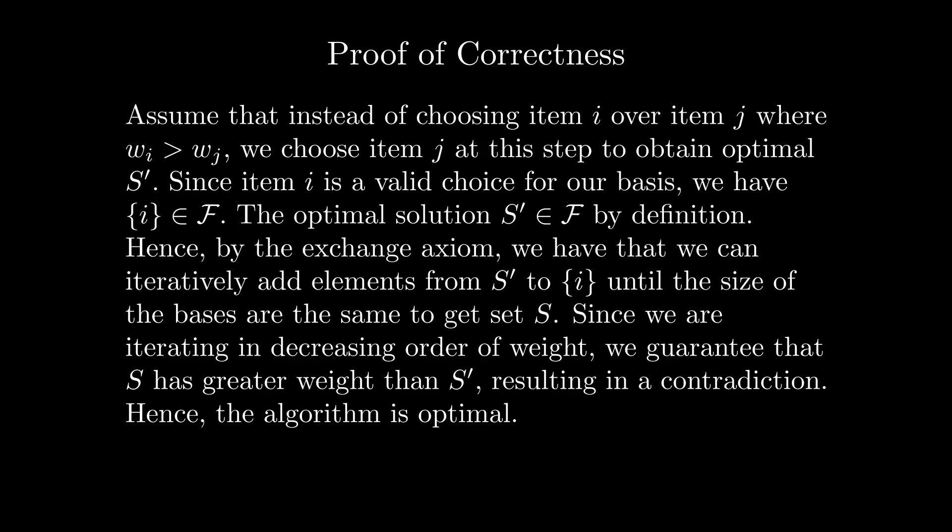This means that we add s' minus 1 elements to the independent set i in total to get s. Since we are iterating in decreasing order of weight, wi is guaranteed to be greater than the weight of the only element which differs between s and s', hence, the total weight of s is greater than that of the optimal basis s', resulting in a contradiction. Hence, choosing the highest weight element at each iteration is optimal.